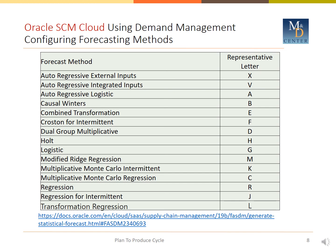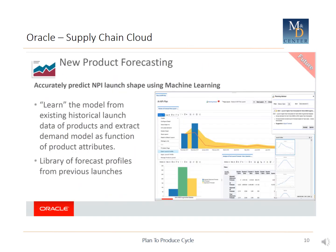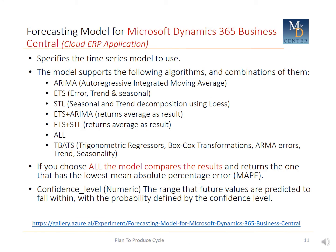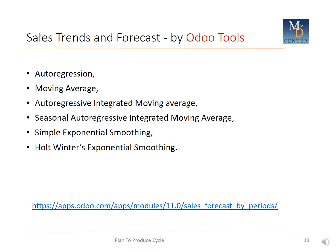In Oracle Supply Chain Management Cloud, we have different forecast methods with automatic selection, including seasonality, error calculations, and even new product forecasting. In Microsoft Dynamics, we have sophisticated forecasting techniques such as ARIMA, ETS, STL, and others — all automatically selected according to forecast error and tracking signal. In Oracle, by contrast, we have a simpler forecasting technique without automatic selection.